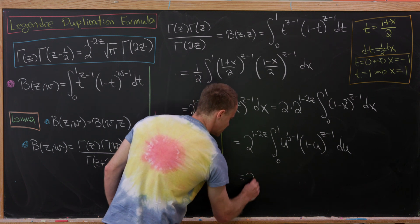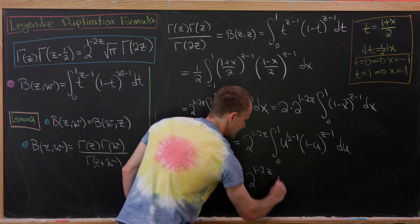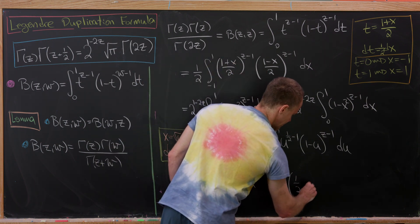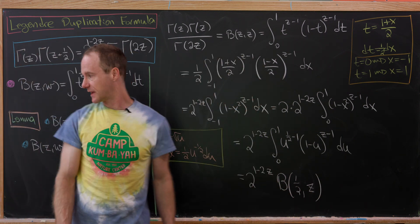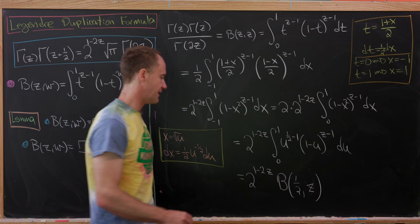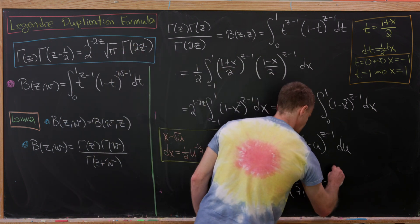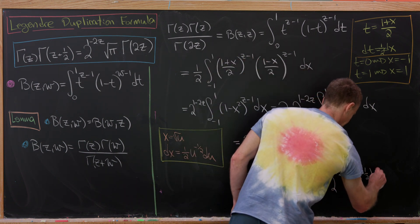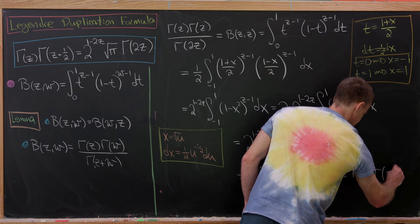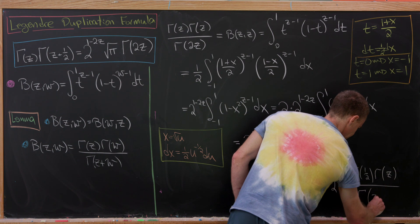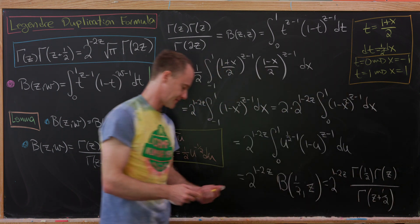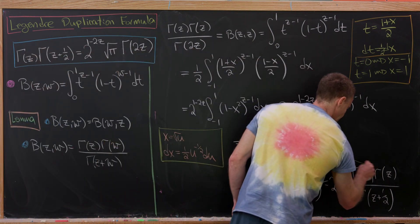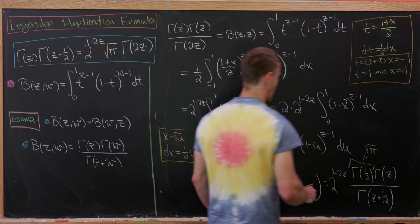This integral is exactly the beta function evaluated at (1/2, z). Applying our formula B(1/2, z) = Γ(1/2)Γ(z) / Γ(z + 1/2), we still have the constant 2^(1-2z) out front. So B(z,z) = 2^(1-2z) · Γ(1/2) · Γ(z) / Γ(z + 1/2). Using the well-known fact that Γ(1/2) = √π, we can now write the result explicitly.